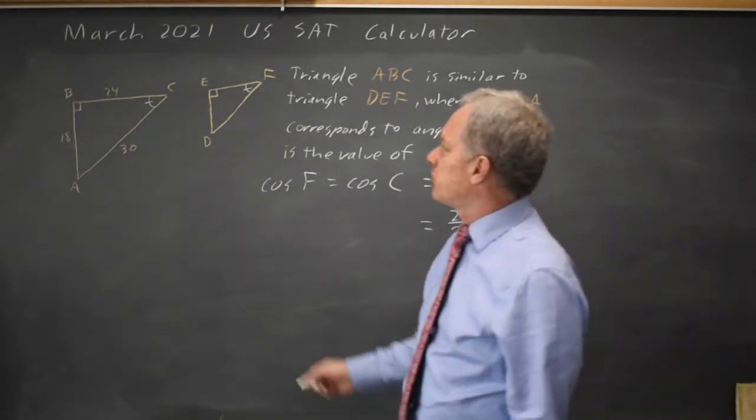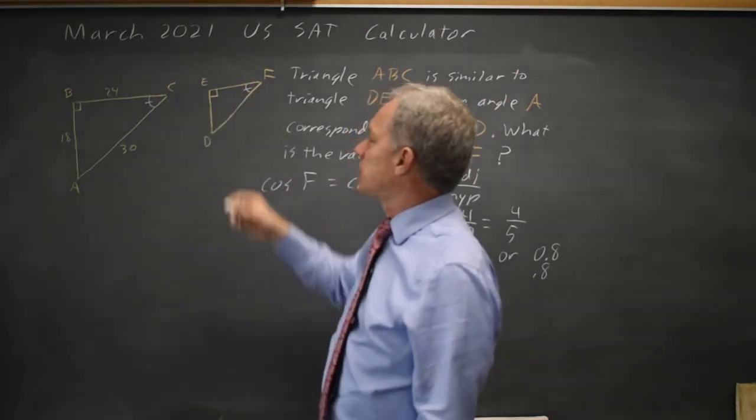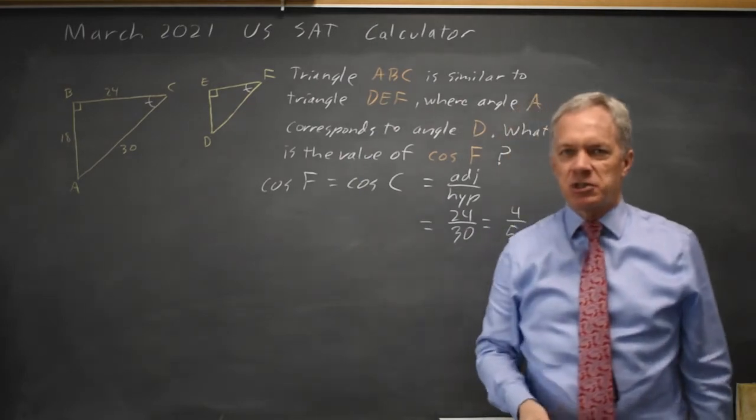Remember that the sine of an angle is the opposite over the hypotenuse and the cosine is adjacent over hypotenuse. Tangent is opposite over adjacent.